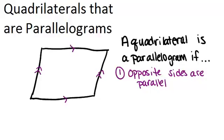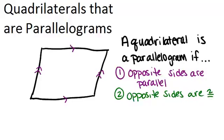Another way to know if a quadrilateral is a parallelogram is if opposite sides are actually congruent. So if you don't know that the opposite sides are parallel, but you know that they're congruent, that's enough to know that the quadrilateral is a parallelogram. That would be notated by tick marks, or it could give you the lengths of the sides, and you would be able to see that they're the same length.